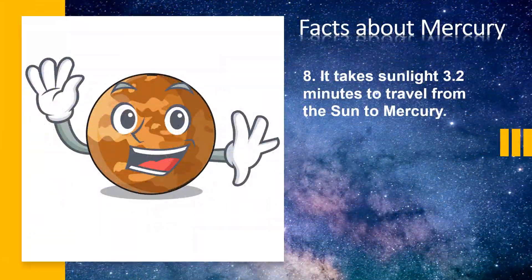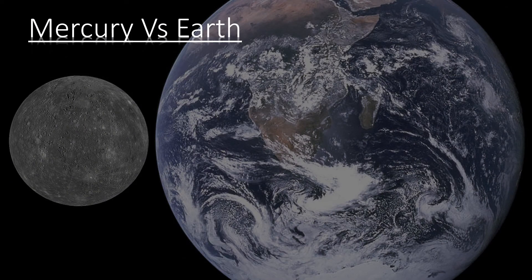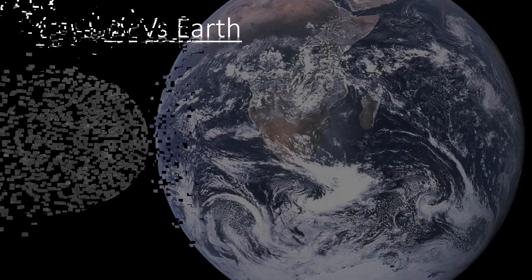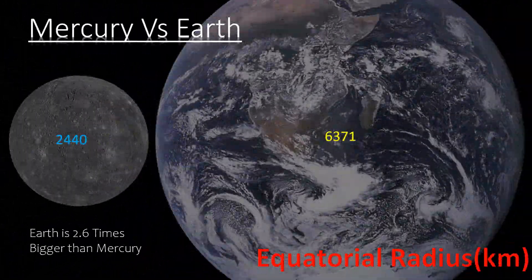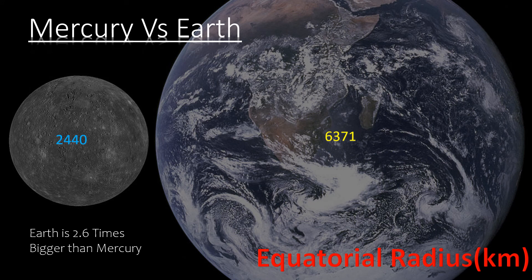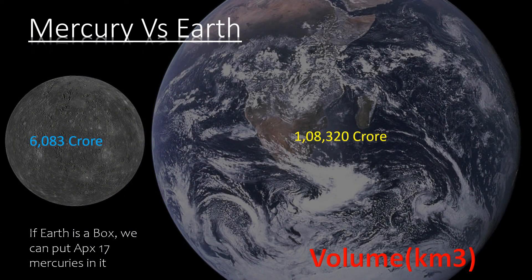It takes sunlight 3.2 minutes to travel from the sun to Mercury. Now let us compare Mercury with our mother Earth. The Earth is 2.6 times bigger than Mercury as per the equatorial radius in kilometers.